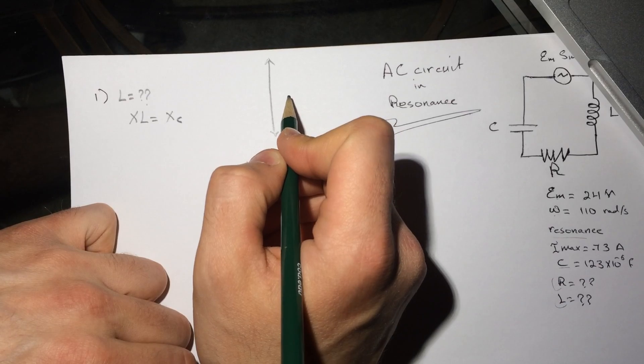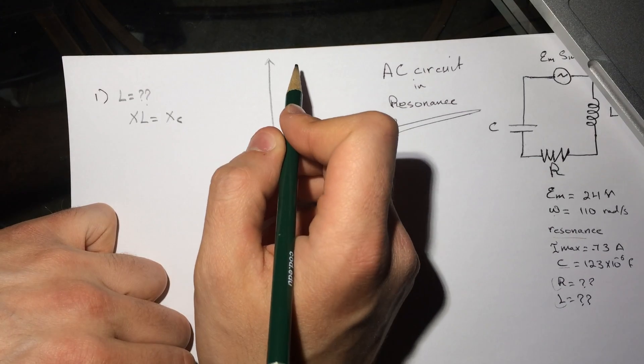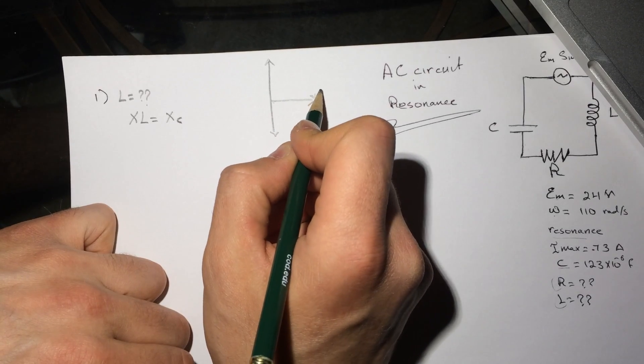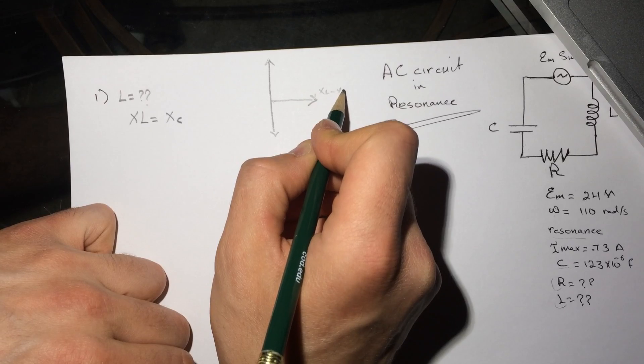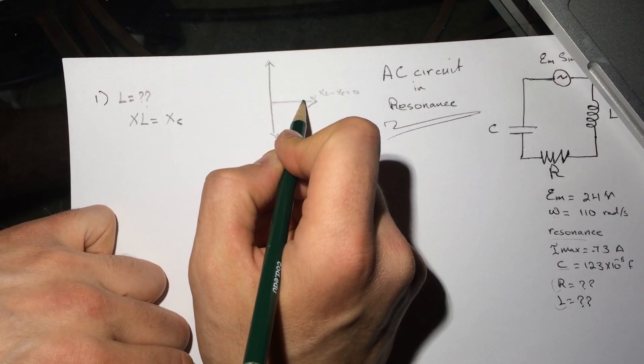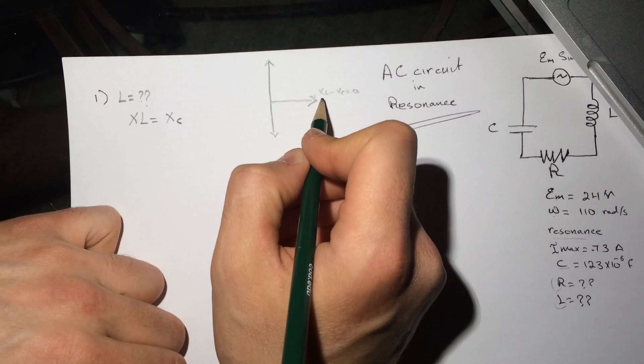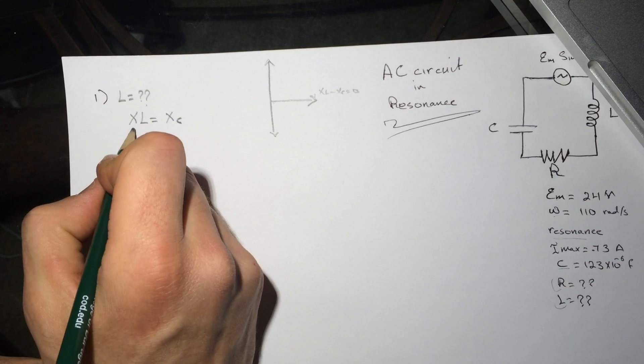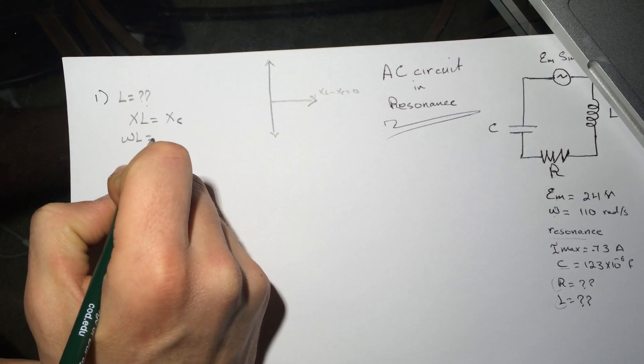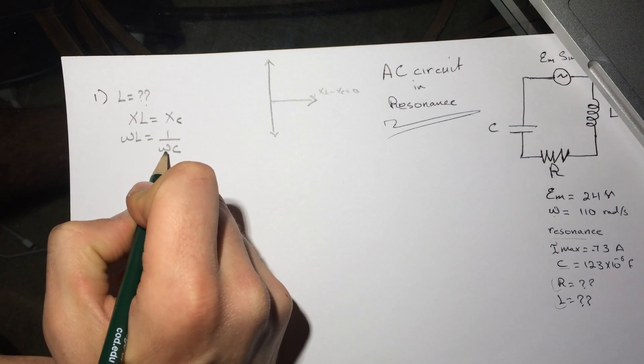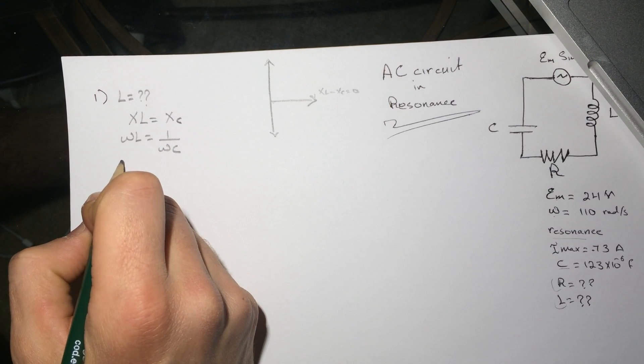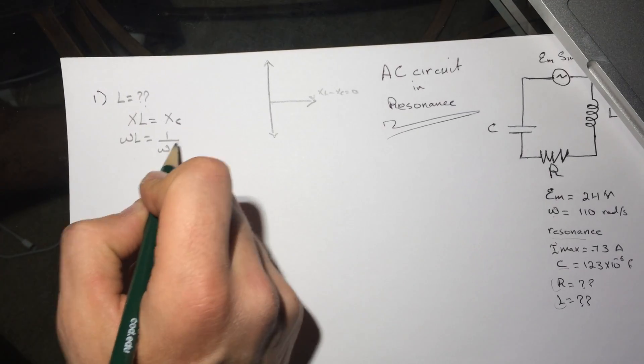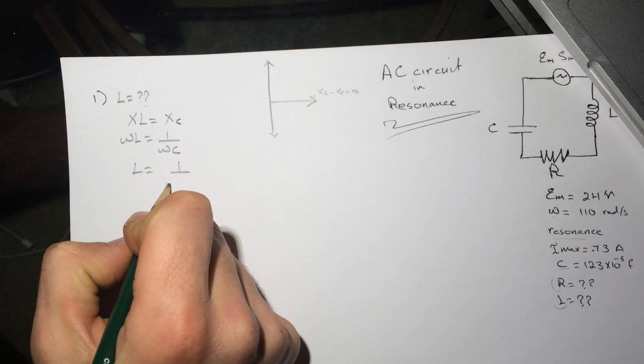For the R and the voltage to be in phase, XL minus XC equals zero. For the current and voltage to be in phase, which makes the circuit in resonance. So XL equals XC, which means L will be equal to 1 over omega squared C.